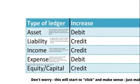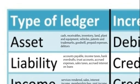Examples of an asset account include cash, receivables, inventory, land, plant and equipment, vehicles, patents and trademarks, goodwill, prepaid expenses and debtors. Examples of a liability ledger account include accounts payable, income tax, bank overdrafts, trust accounts, accrued expenses, sales taxes and accrued interest on loans.